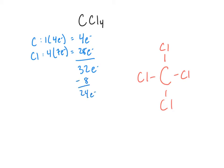That leaves us with another 24 electrons. The next step is to place any remaining electrons as lone pairs, starting with the outer atoms first, in order to form octets. So we're going to start drawing in our lone pairs — six more around each chlorine, giving each atom an octet. We've now used all 24 remaining electrons, satisfying our first overriding rule: we've used all of our valence electrons.